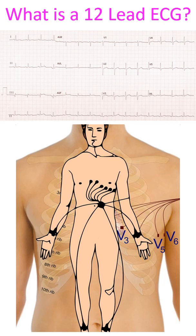Standard 12-lead ECG consists of 6 precordial leads, 3 conventional limb leads and 3 augmented limb leads. Ideally, electrocardiographic data from all 12 leads should be simultaneously acquired. Some electrocardiographs acquire 3 channels simultaneously while others record leads sequentially in a single channel. The advantage of simultaneous multi-channel acquisition is that any beat can be analysed in all the channels, making analysis of complex arrhythmias easier.